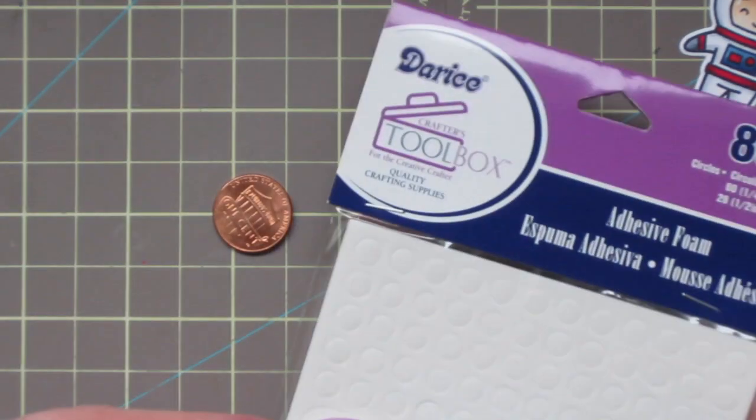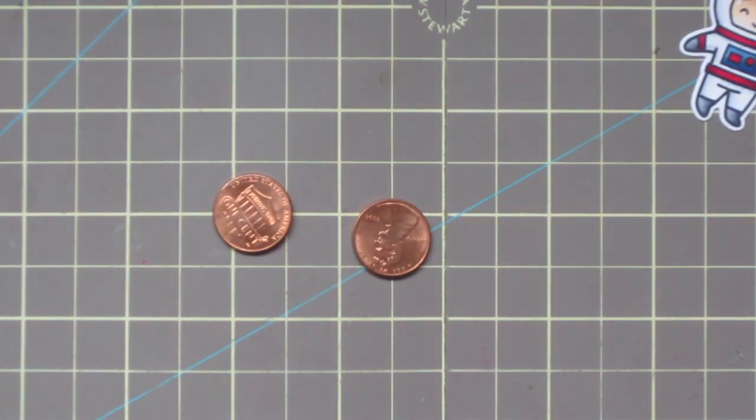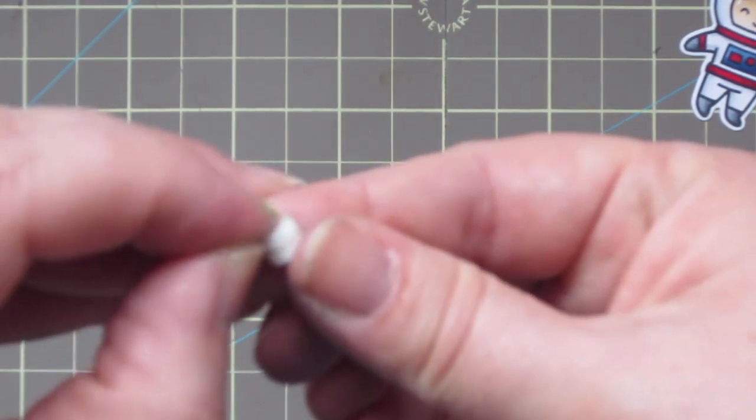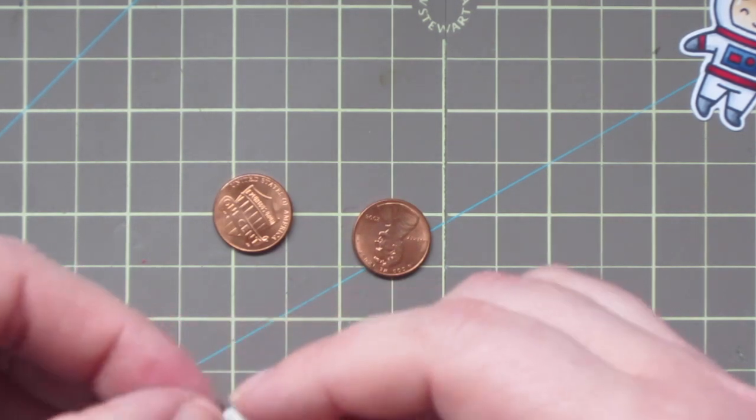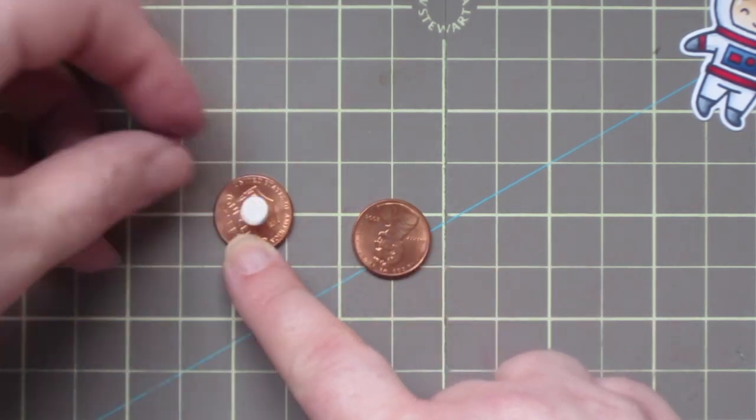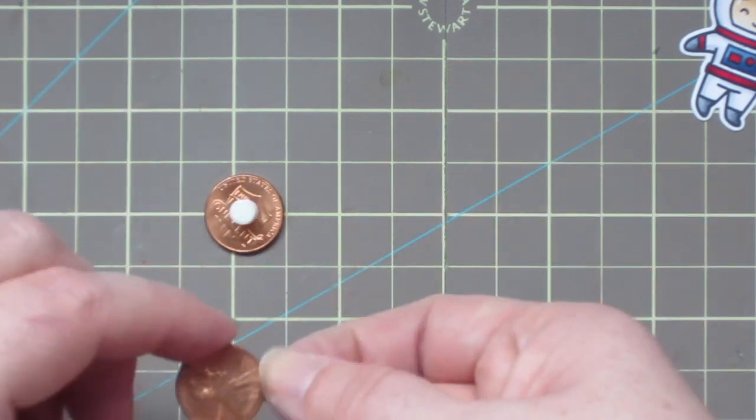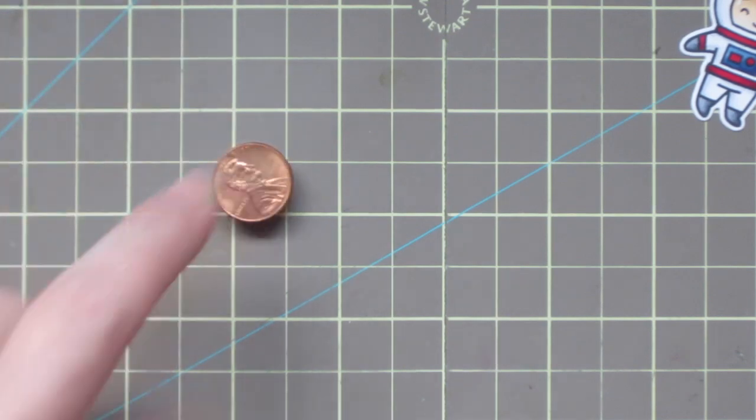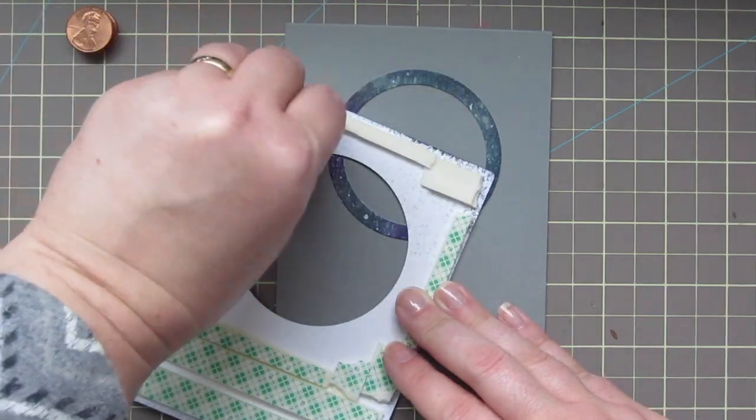The second method is to take the adhesive foam circle dots, and I'm just going to take two of those and stack them together so that it makes it a little bit higher. And then I'll just adhere those to my pennies. So this way was much quicker and didn't have to deal with the mess of adhesive glue. The other way makes a little bit of a stiffer mechanism. This one you can pinch together because the foam squishes up. I don't know which one is better. I think they're both fine.